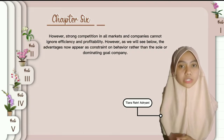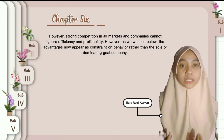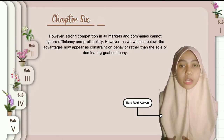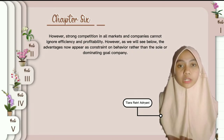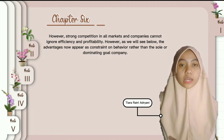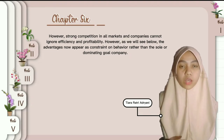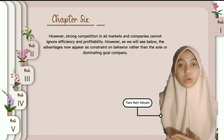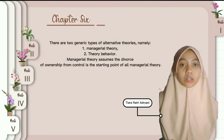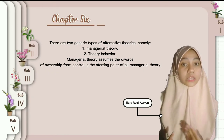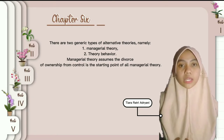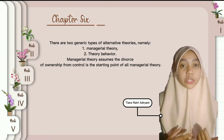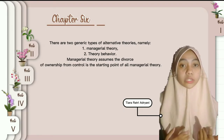However, strong competition in a market means companies cannot neglect efficiency and profitability. As we will see below, the advance now and the source of domination cost the company. There are two types of alternative theories: number one, managerial theory, and number two, behavioral theory.